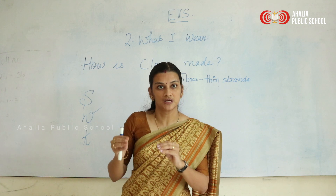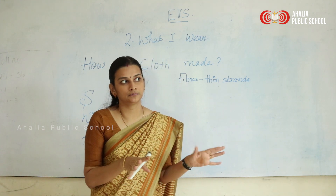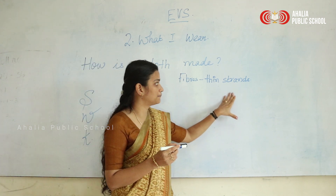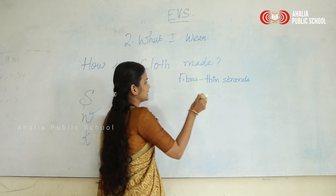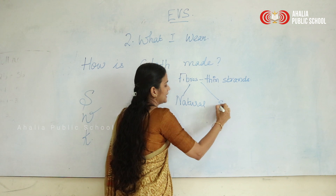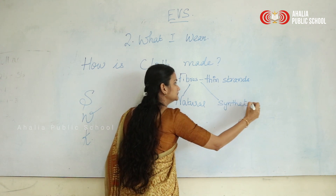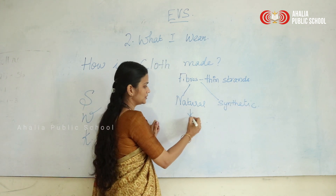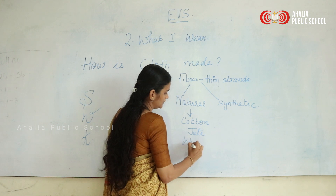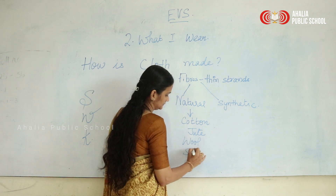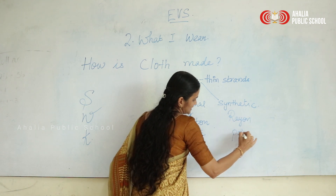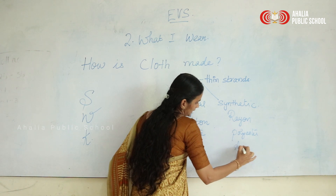In industries and in towns, the cloth is made up of fibers. They are of two kinds: natural and synthetic. Under natural you have cotton, jute, wool, and silk. Under synthetic you will have rayon, polyester, and acrylic.